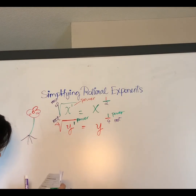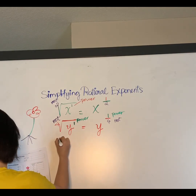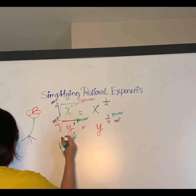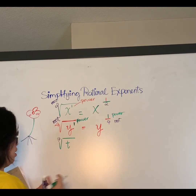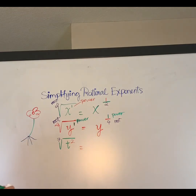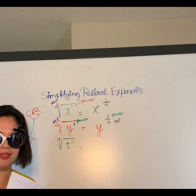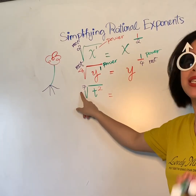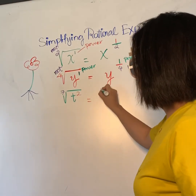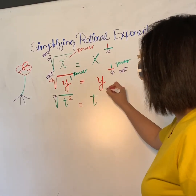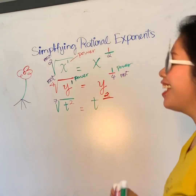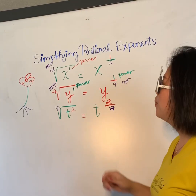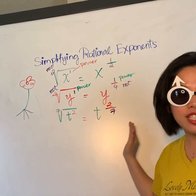Now we have t squared inside, and seven outside — so the root is seven. Give it a try! Here, the power is two and the root is seven, so this becomes t to the power of two over seven. Power over root, inside over outside — that's how you convert from radical notation to rational exponent form.